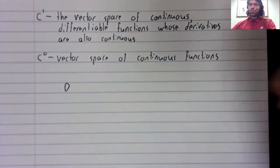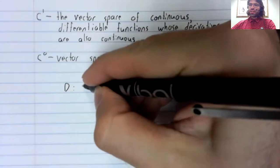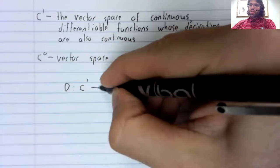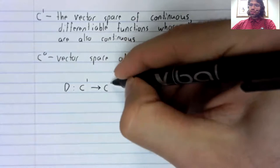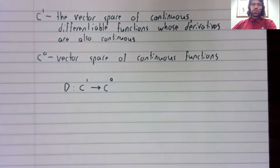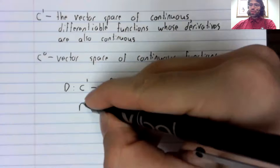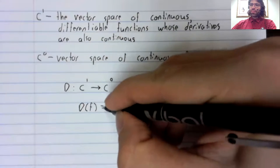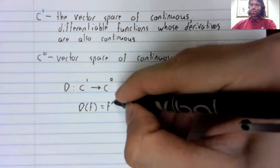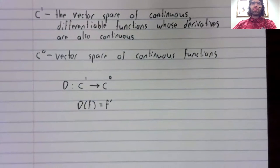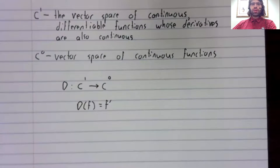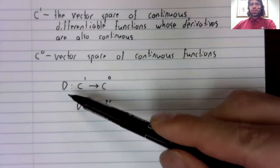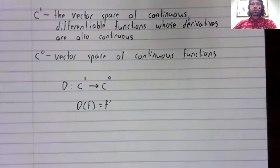We'll define a transformation D from C1 to C0. D of F equals F prime.